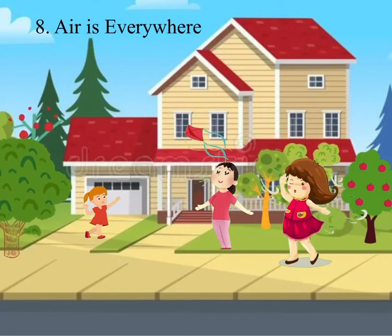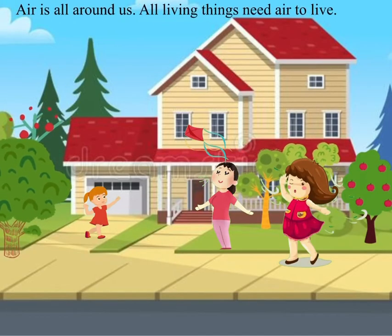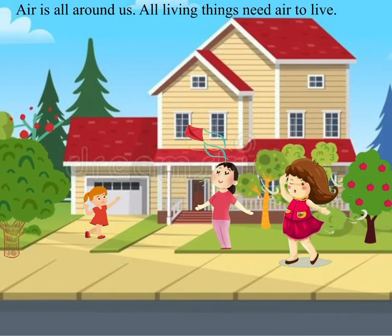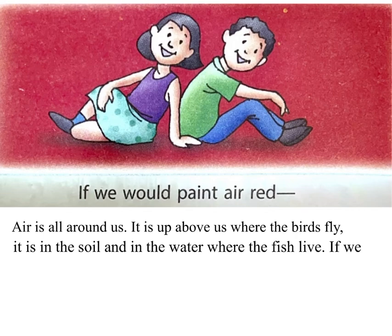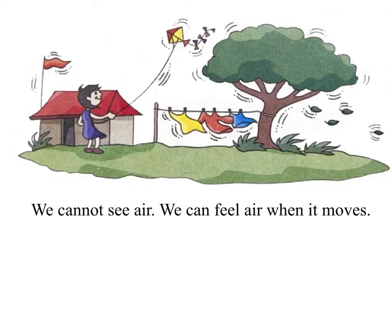Chapter 8: Air is everywhere. Air is all around us. All living things need air to live. Air is up above us where the birds fly. It is in the soil and in the water where the fish live. If we could paint air red, this is how the air around us would look.